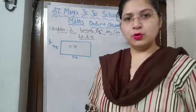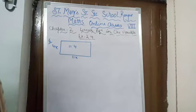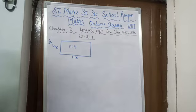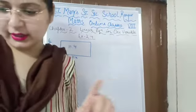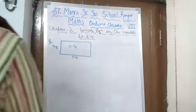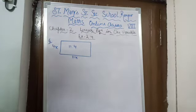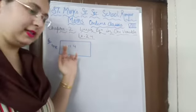Question number 6 is: there is a narrow rectangular plot reserved for a school in Mahuli village. There is a village whose name is Mahuli, and in that village one rectangular plot is reserved for a school, whose length and breadth are in ratio 11:4.